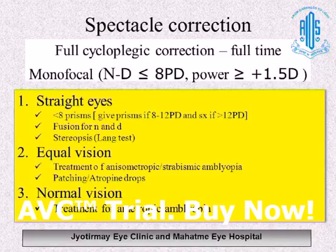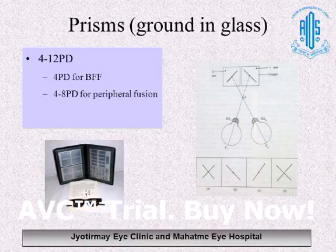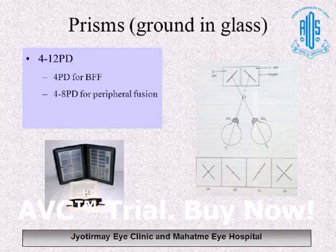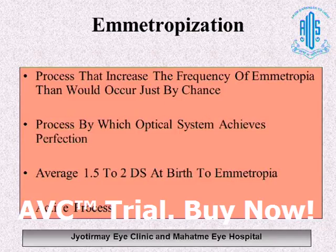Once normal vision is achieved in both eyes, if the residual strabismus is more than 8 prism diopters but less than 12, prism glasses split between both eyes can be prescribed. If it is more than 12 prism diopters, the patient is eligible for strabismus surgery.